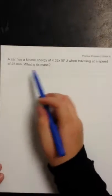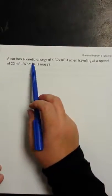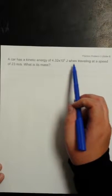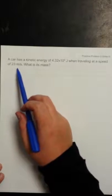Slightly different approach this time in this problem. Here we've got a car with a kinetic energy of 4.32 times 10 to the fifth joules when it's traveling at a speed of 23 meters per second.